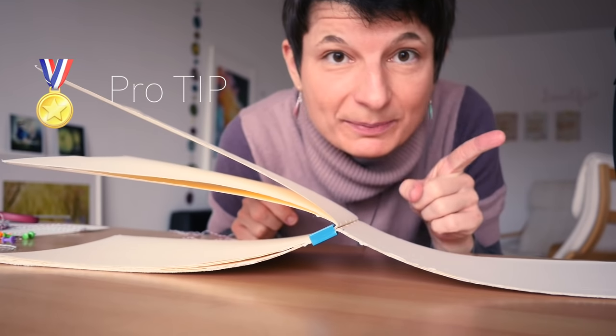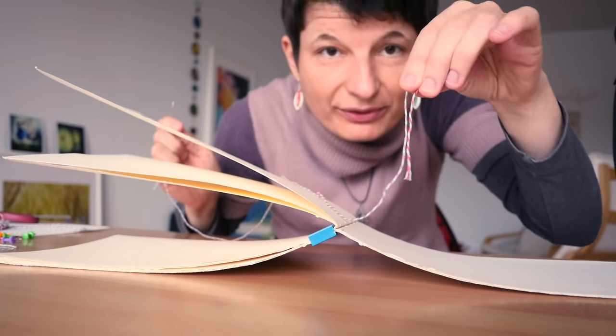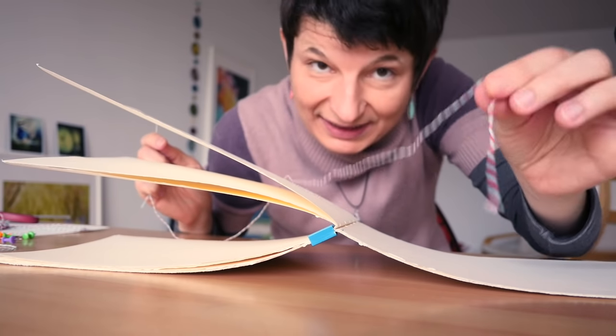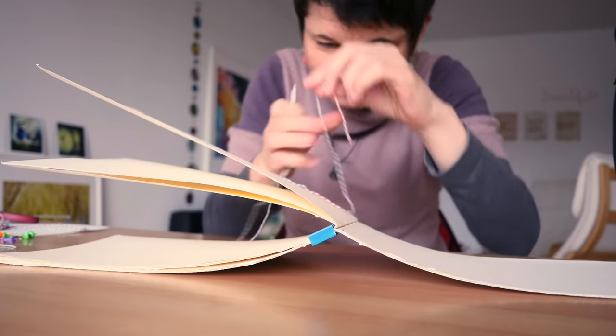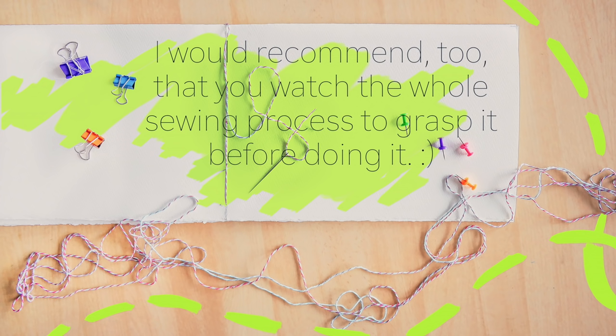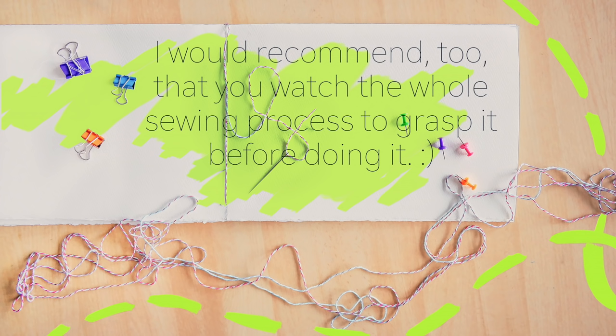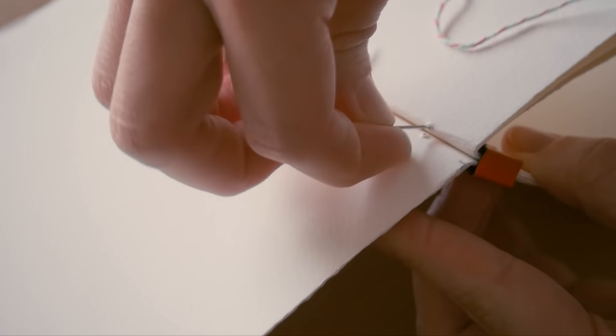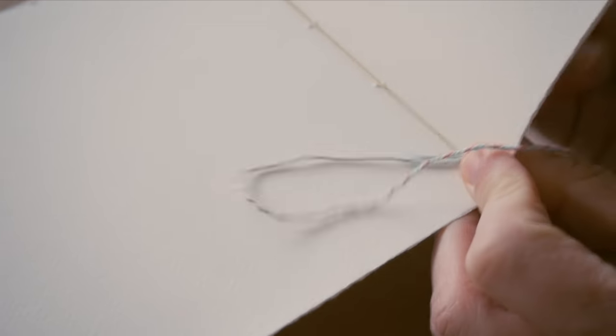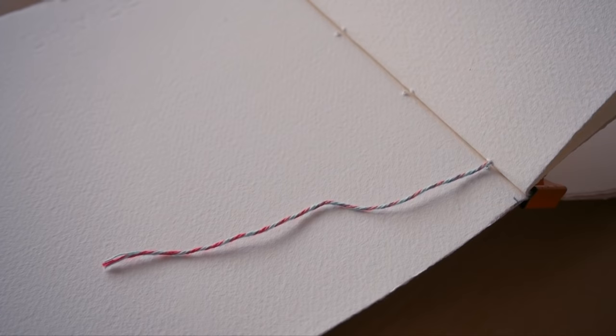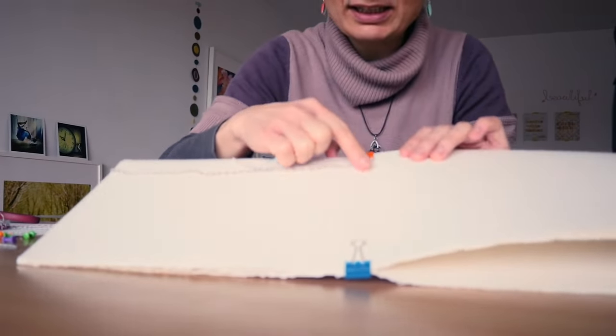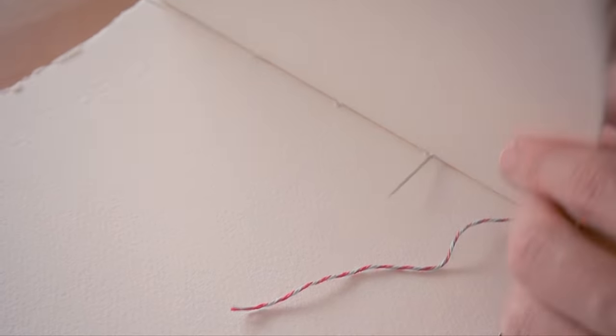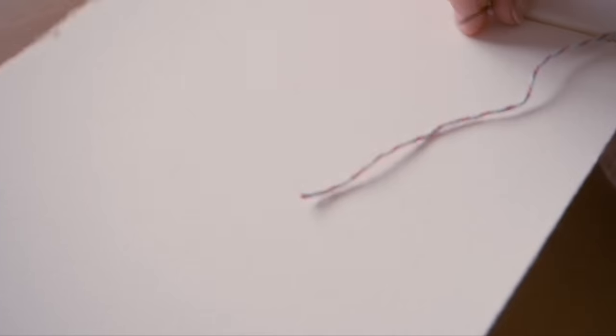My next pro tip is don't make a knot at the end of the thread. You will see how it goes at the end and why I recommend not to make a knot. Just start sewing the sketchbook by the outside and keep a bit of a tail at the end. Then inside the signature, move forward and go out again.